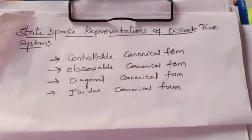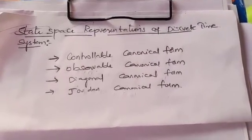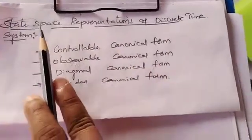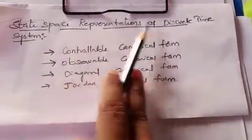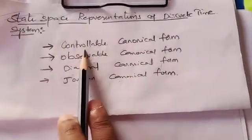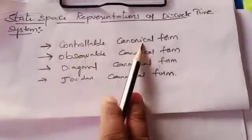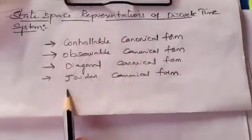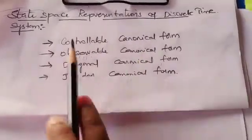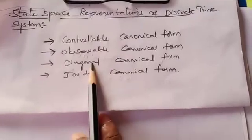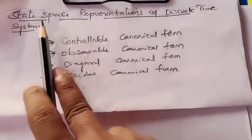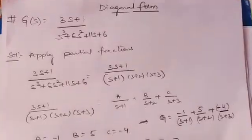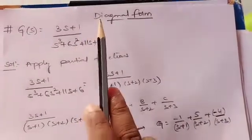Good morning students. Today we will see problems based on state space representation of discrete time systems. This state space representation can be done in four ways: controllable canonical form, observable canonical form, diagonal canonical form, and Jordan canonical form. Today we will see the problem based on diagonal canonical form.